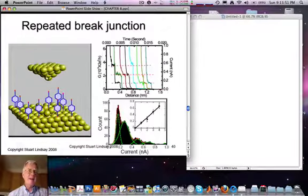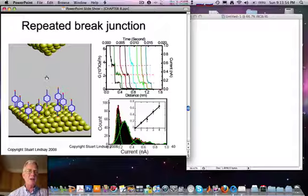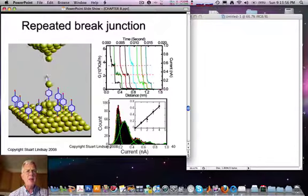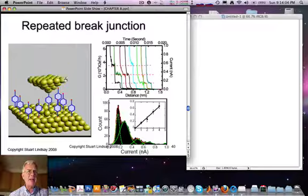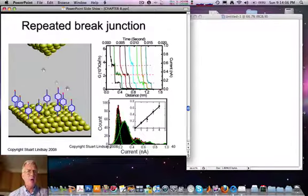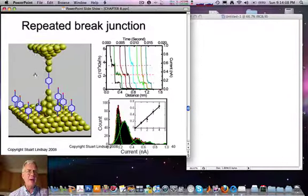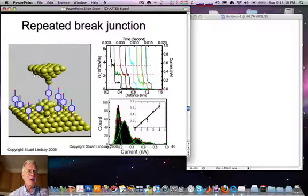In this slide, I illustrate the break junction technique in which a gold probe is brought down towards a metal surface containing molecules with reactive groups at each end. And when a molecule is trapped in the junction like this and the gold probe pulled away,